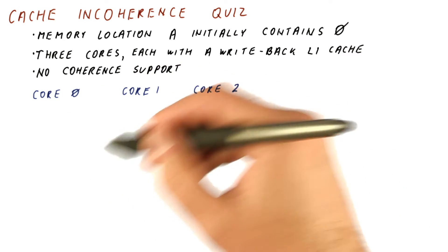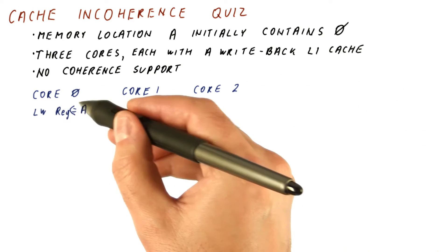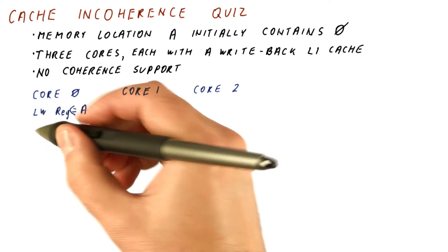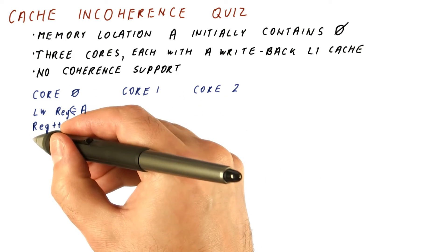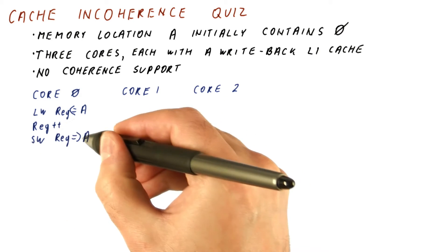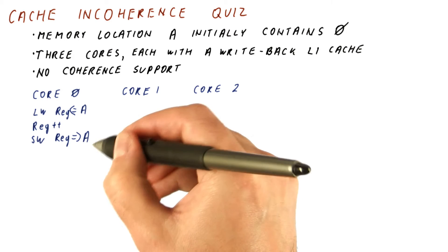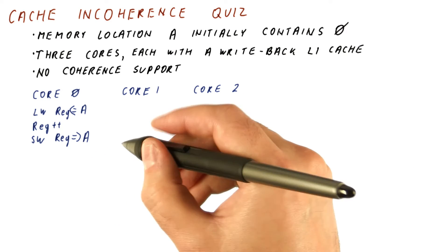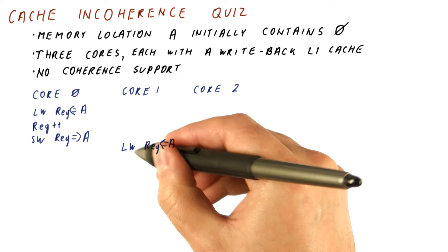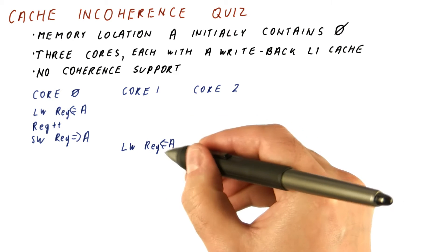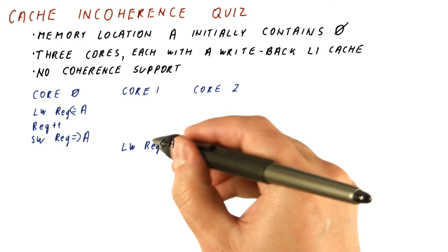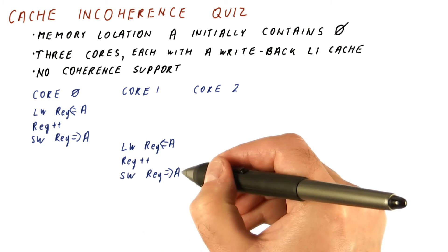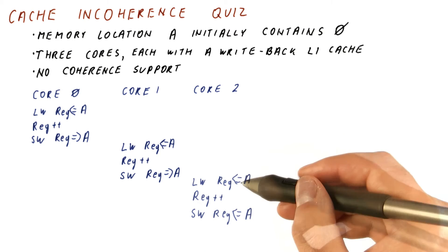And this is what the three cores do. Core zero loads from A into a register, increments the value in the register, and then stores the register back into memory location A. Sometime later, core one does pretty much the same thing: it loads A into a register, increments, and writes the register back to A. And finally, core two does the same thing.